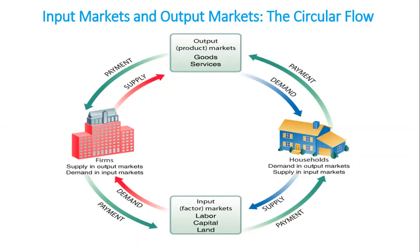On the other side, if you look at the output market, firms will supply goods and services to this market, and households will consume them, and in return they will pay the prices. In the rest of the video, we will focus on the output market and see demand and supply in the output market.